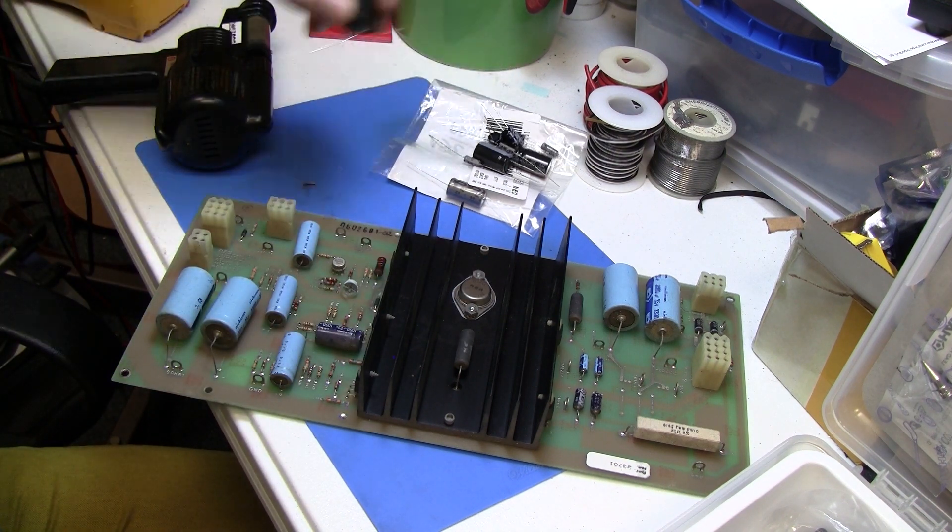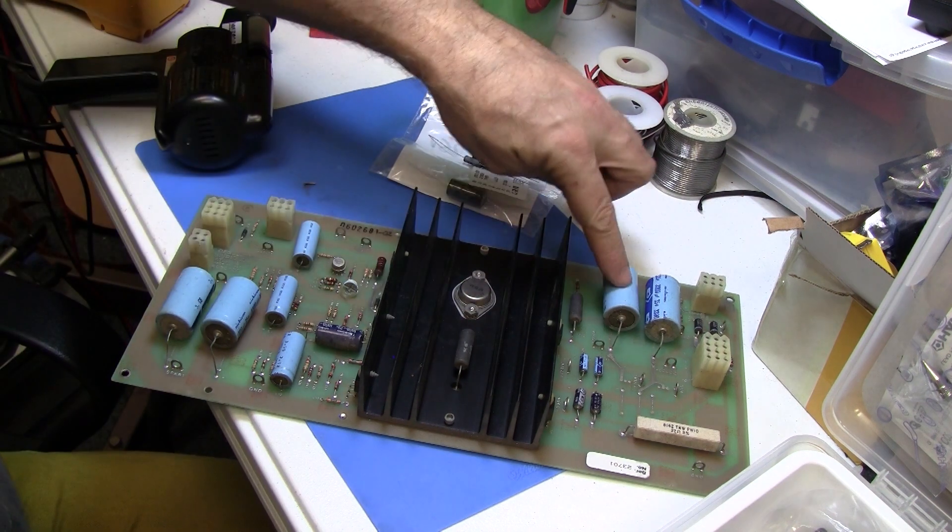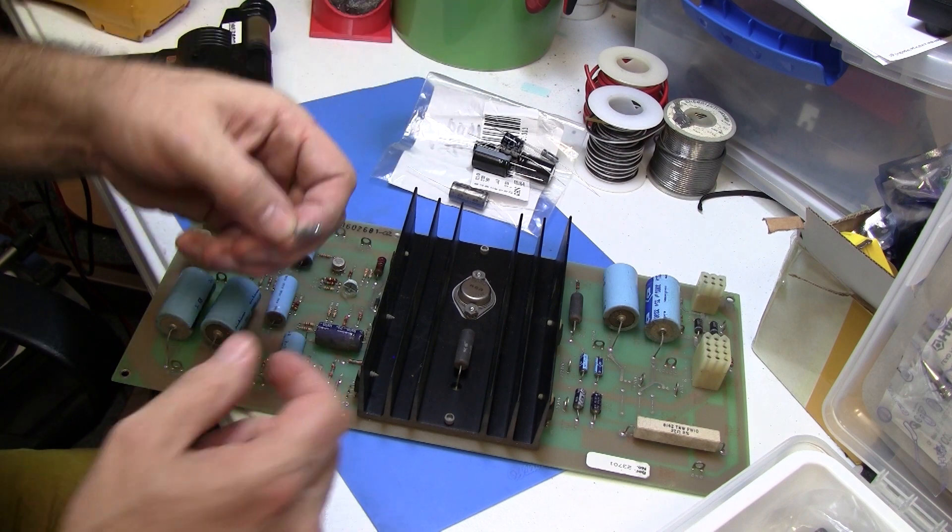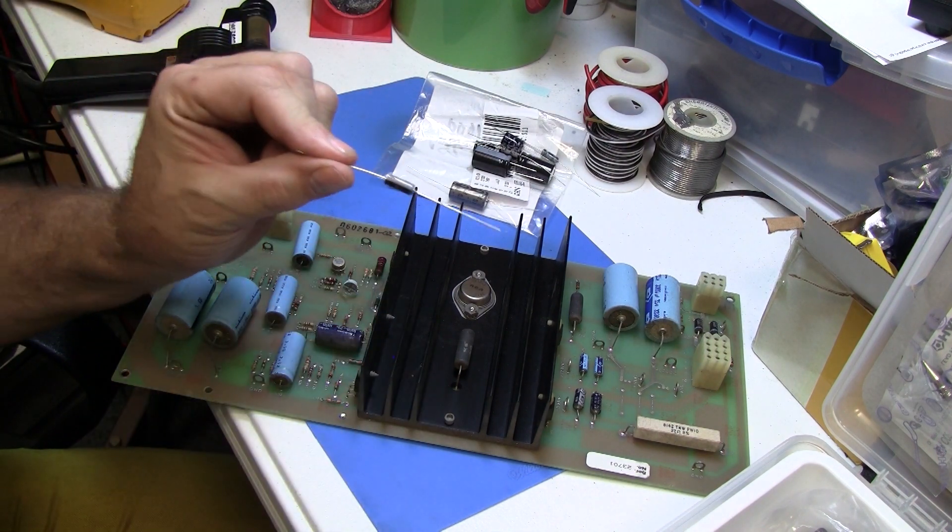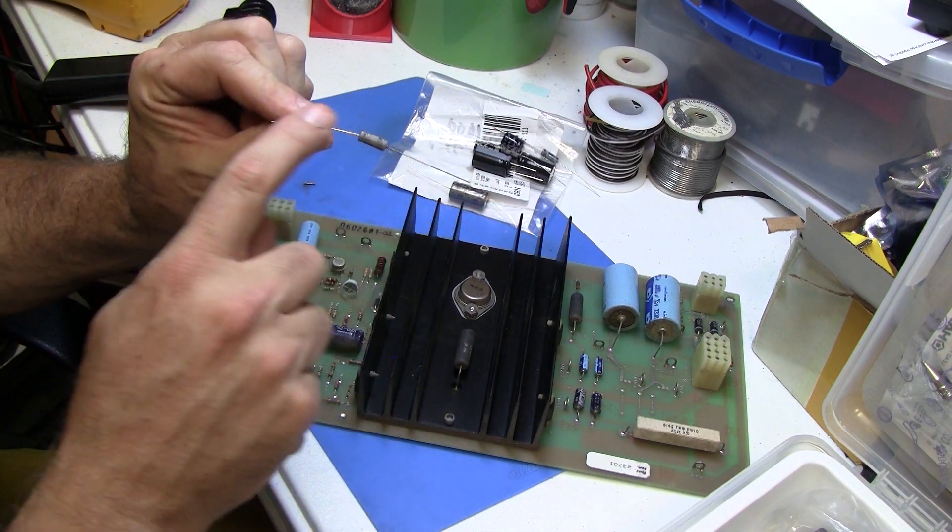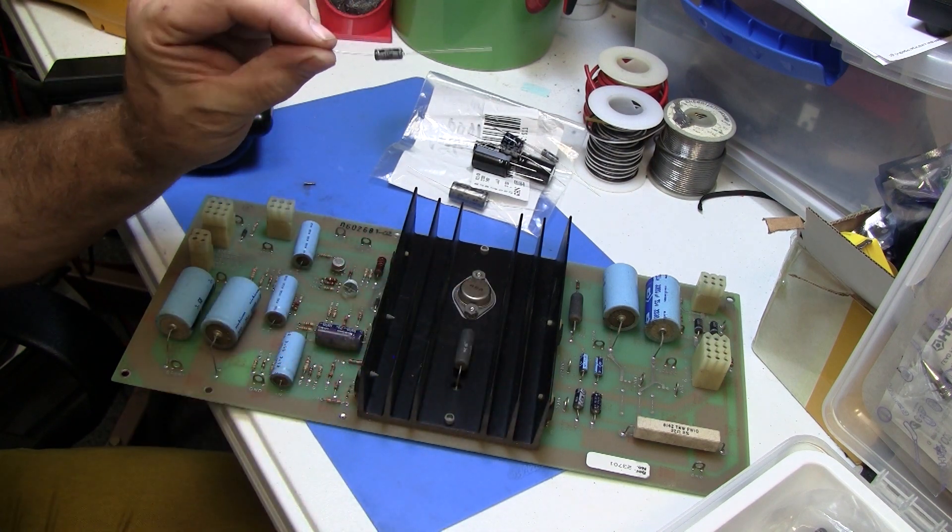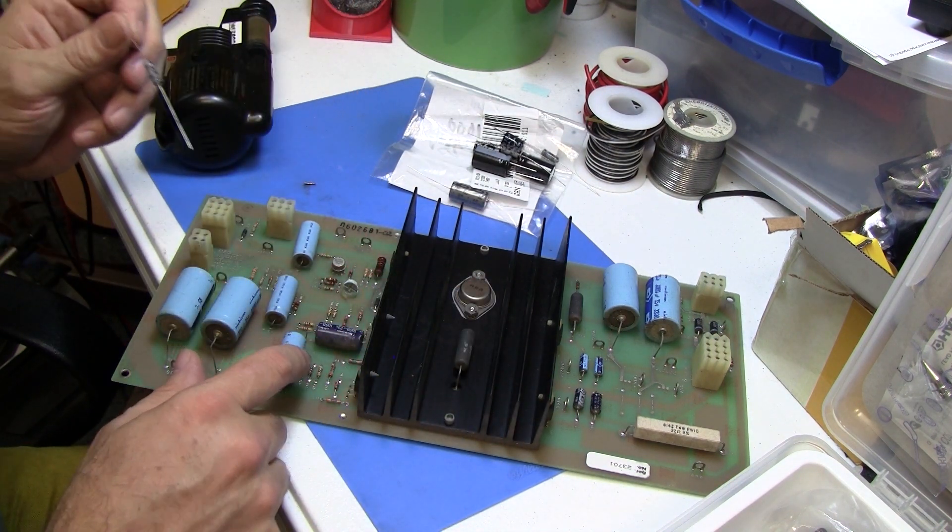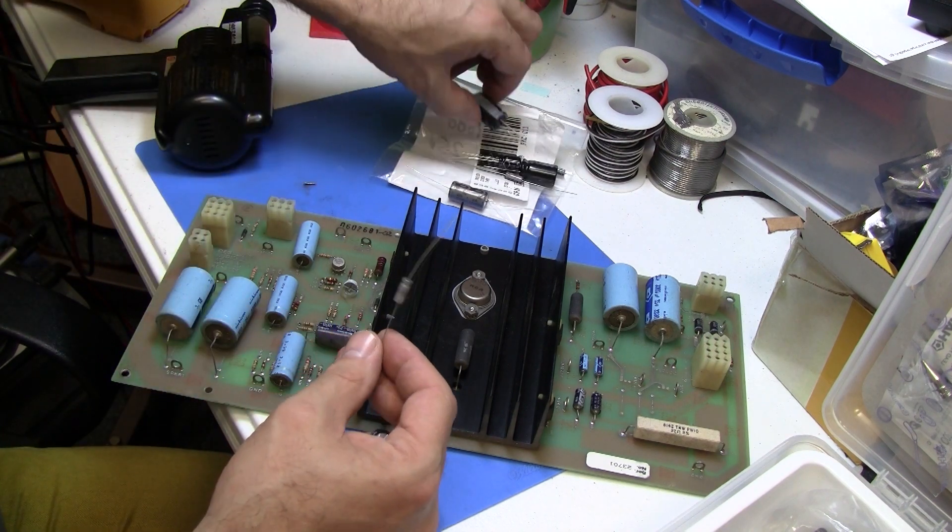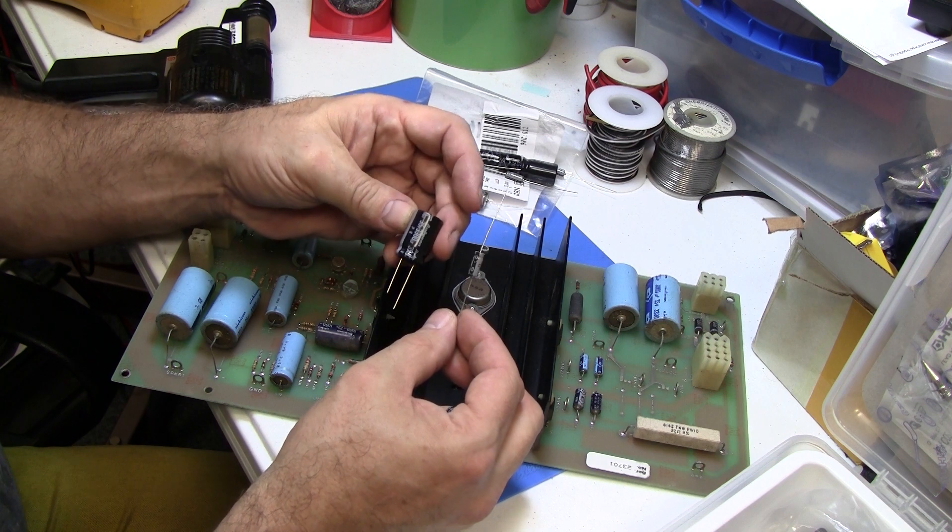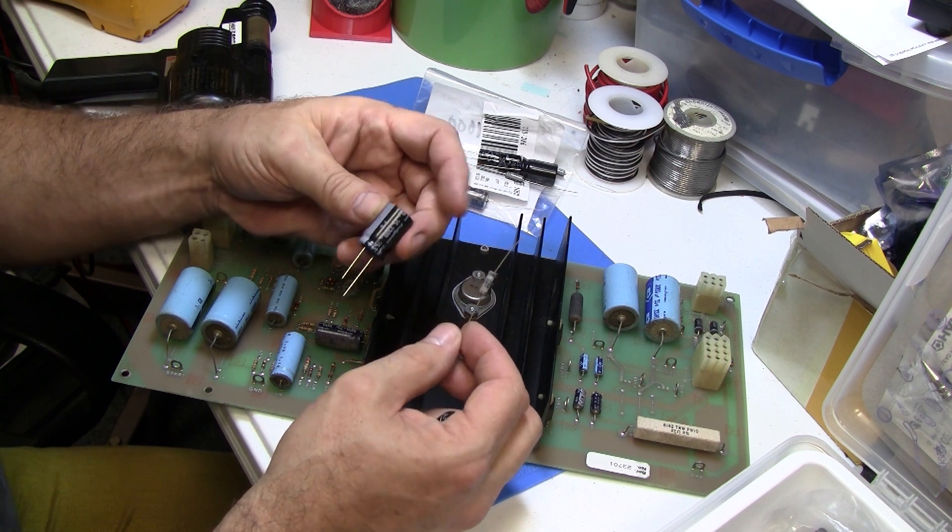A few interesting things about the capacitors. These are all what are called axial capacitors. An axial capacitor is one like this, where you've got the capacitor in the middle and the leads are at either end, kind of like a Tootsie Roll. But there's also radial capacitors. This is a radial capacitor. They're both polarized electrolytic capacitors. They both have a positive and a negative.